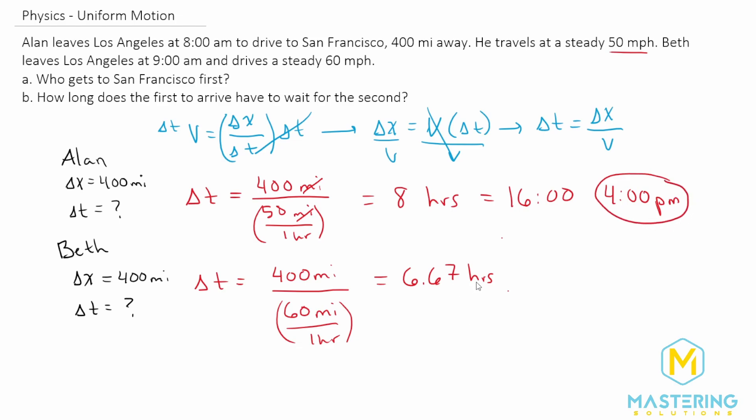And now if we do the same thing for Beth, she leaves at nine o'clock, plus 6.67 hours, so that will be 15.67 o'clock, which is 340, which is essentially 3:40pm.